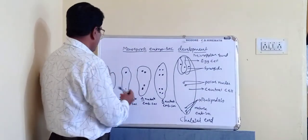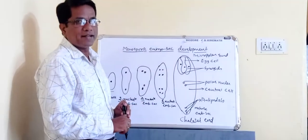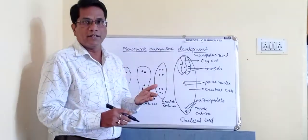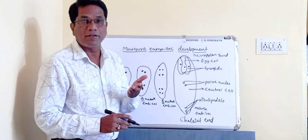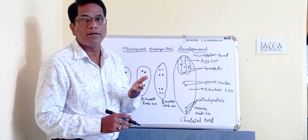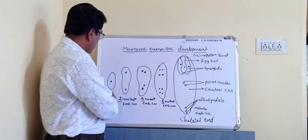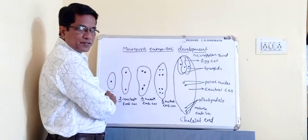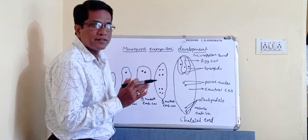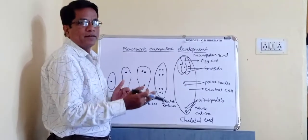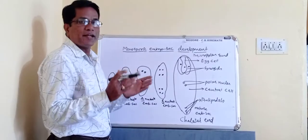That functional megaspore develops into an embryo sac, or female gametophyte. Let us discuss the development of embryo sac from a single cell — the megaspore. The megaspore cell has a prominent nucleus, and this nucleus undergoes mitotic divisions. Remember: mitotic division is an equational division.